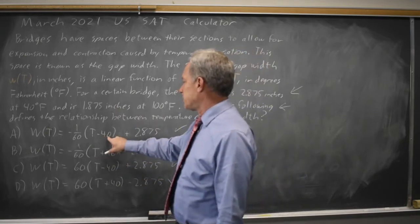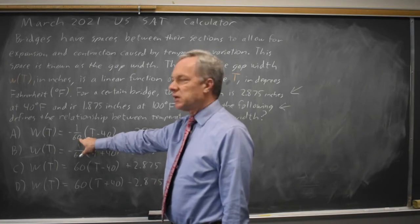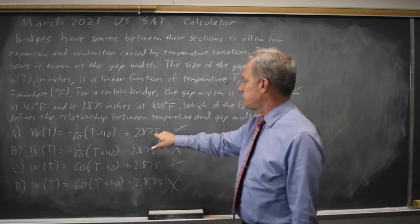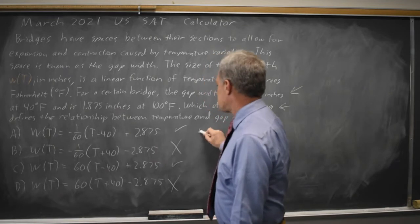100 minus 40 is 60 times negative 1 over 60 is negative 1. Negative 1 plus 2.875 is 1.875, so that works again.